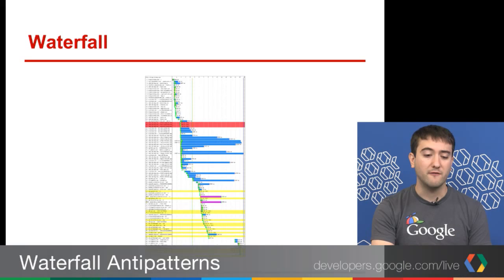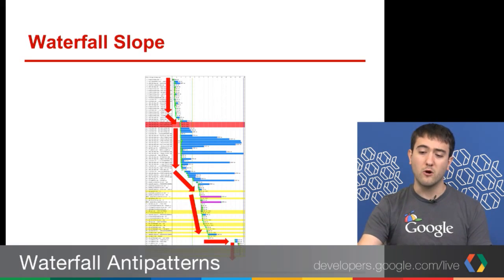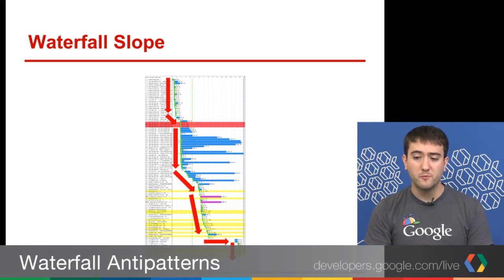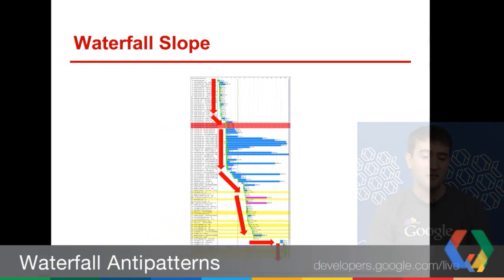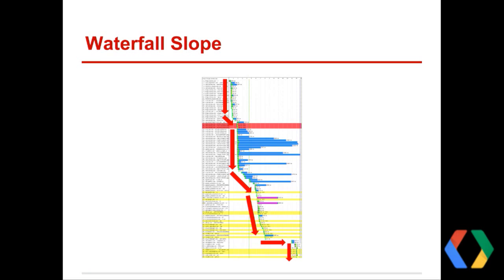When we look at a waterfall from this high level, one technique I've learned to use is looking at something called waterfall slope. Slope is the rate at which requests are being made over time. We have the requests running down the page from top to bottom, and from left to right is the time axis, starting at zero in the top left. What we want to see is a vertical line going straight down — think of this like Niagara Falls, just flowing straight down quickly. That means we're doing more in less time, getting more requests out in a shorter amount of time.